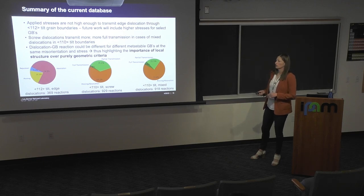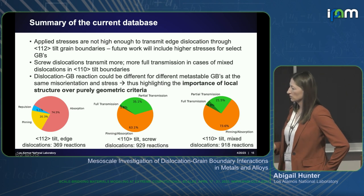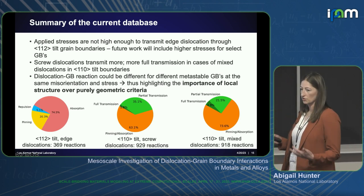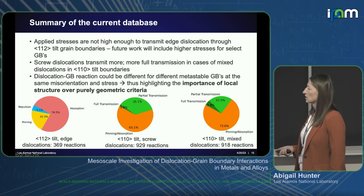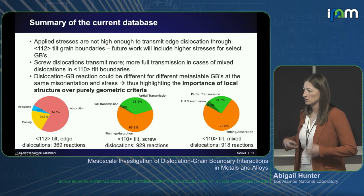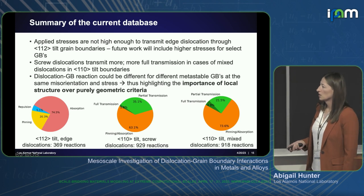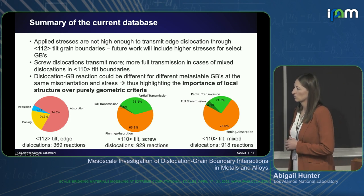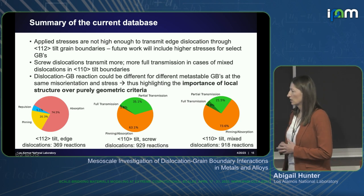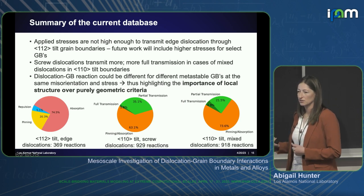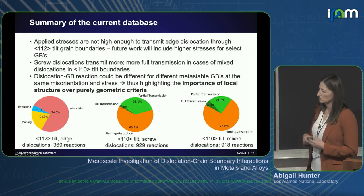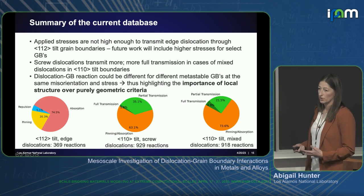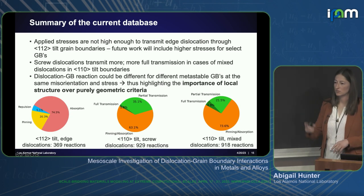This is a quick summary showing all data for all three stress states combined for each case. The database has expanded since I first compiled this, as we continue to grow it. One thing to note: this is a big data case, and even looking at it in aggregate, it's hard to pull out fine details. Regarding how percentages are computed: simply out of the total number of reactions — for example, 74.5% were absorption. We haven't specifically looked at energy changes as the dislocation impinges; we've mostly looked at initial grain boundary energy.